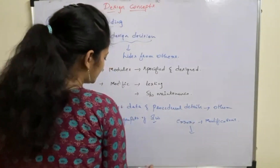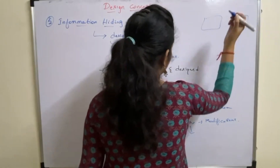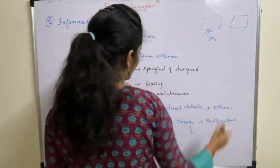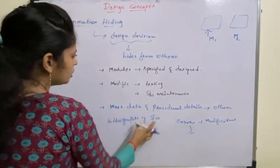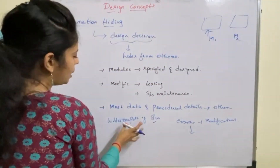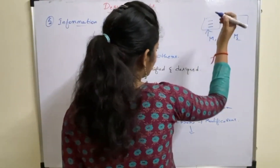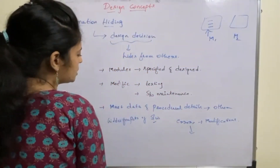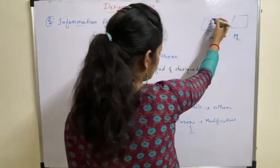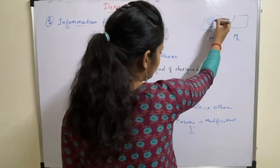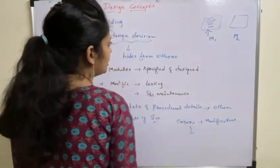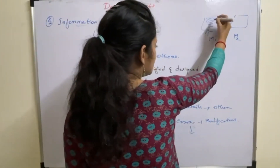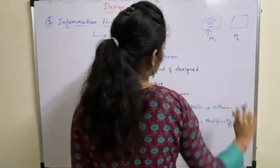As data and procedural details are hidden from other parts of the software, say suppose some errors occur during modifications in module M1. The data and information present in module M1 are hidden from other parts and not visible to other modules. So even if you make modifications or errors occur in module M1, as M2 is not making use of any information from M1, those errors or modifications don't show any impact on module M2.